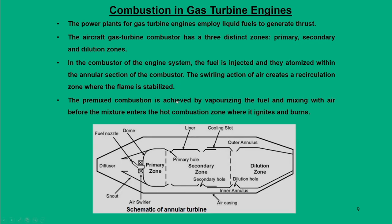Moving to gas turbine engine combustion — gas turbine engines are normally employed in aircraft. The concept is similar to diesel engines but with different technology. Looking at the schematic of an annular turbine combustor, it consists of a diffuser and nozzles in an annular section. The combustor has three zones: primary zone, secondary zone, and dilution zone.